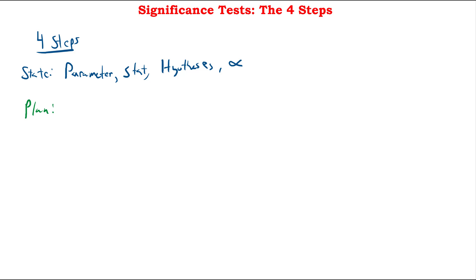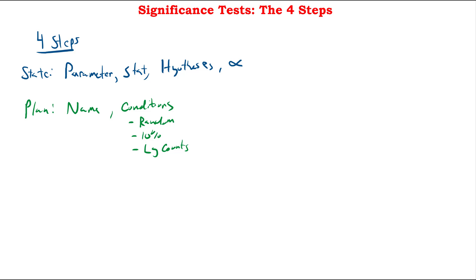Your next step is going to be your Plan. In your Plan, you need to name the test you're going to use. Since we're dealing mostly with proportions today, we're talking about a one-sample z-test for p. You need to name it, and then you need to have all conditions met. For your conditions, you have your random condition, your 10% rule, and then large counts. If you were dealing with means, you'd use the central limit theorem instead of large counts.